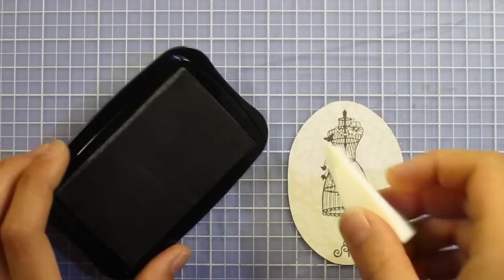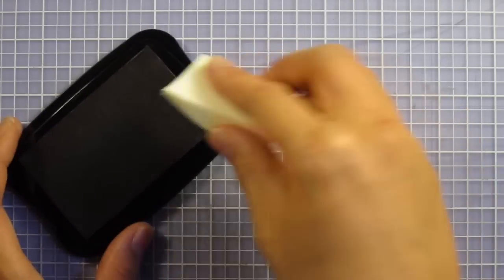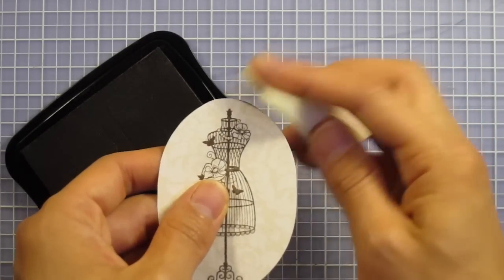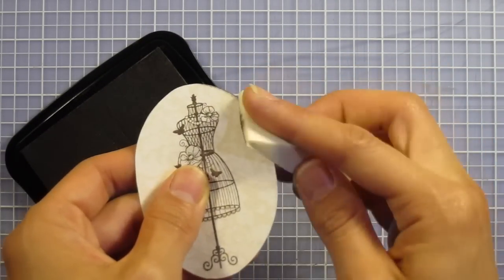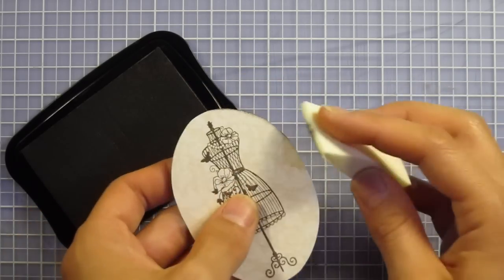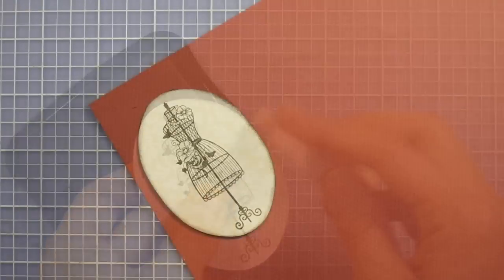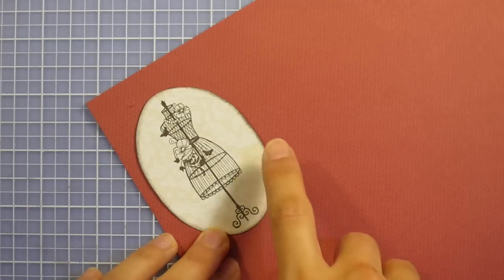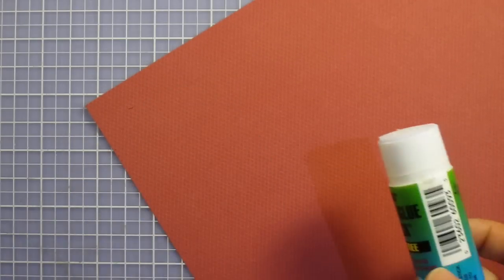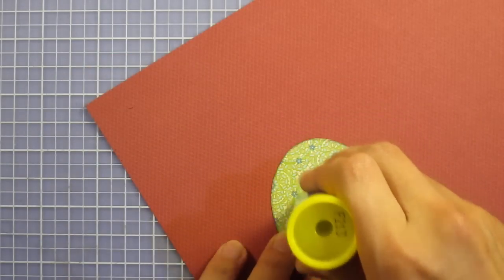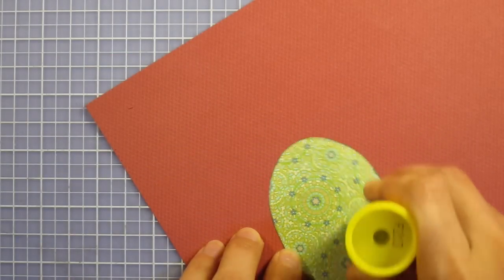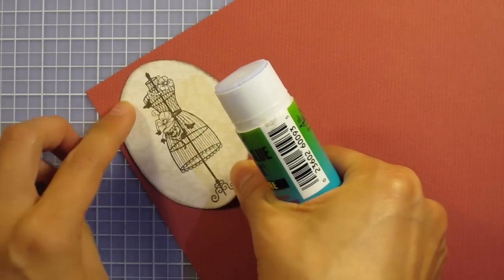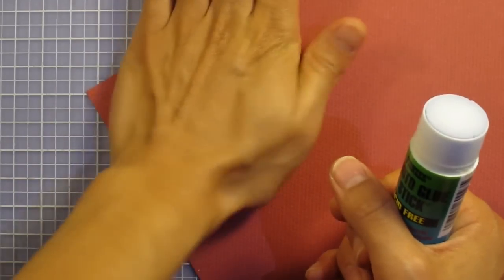I'm going to take a cosmetic sponge again with my Timber Brown and just lightly ink the edges of my oval to give it a nice sharp frame. Now I'm going to mat this on this red paper, just leaving a really thin border. I'm going to glue it down to the red and just cut around it.